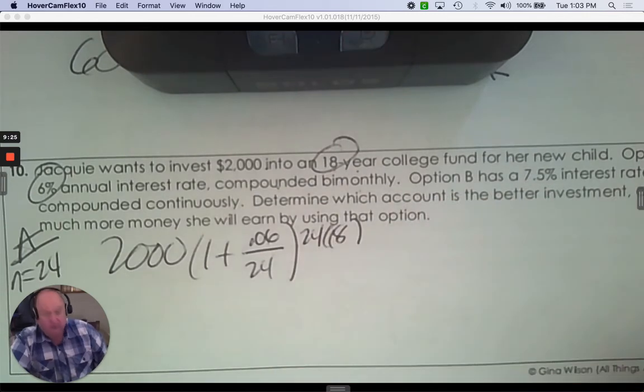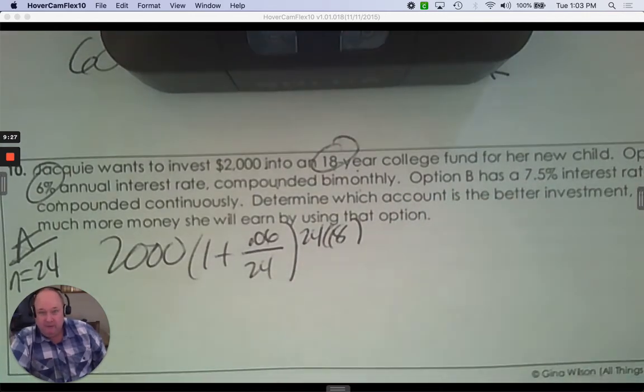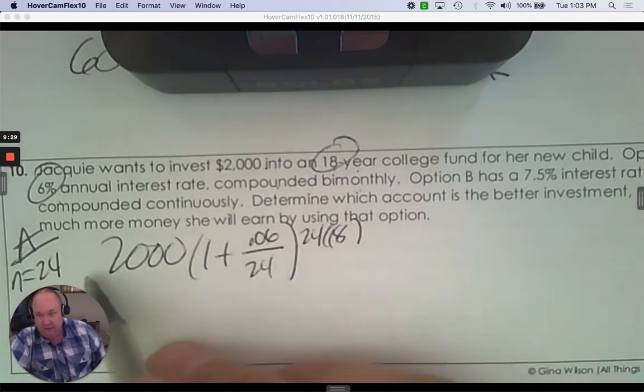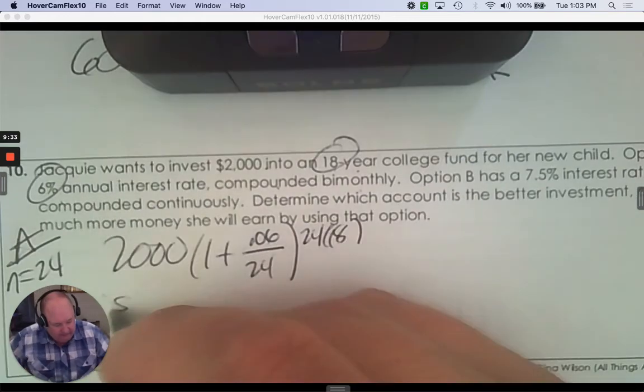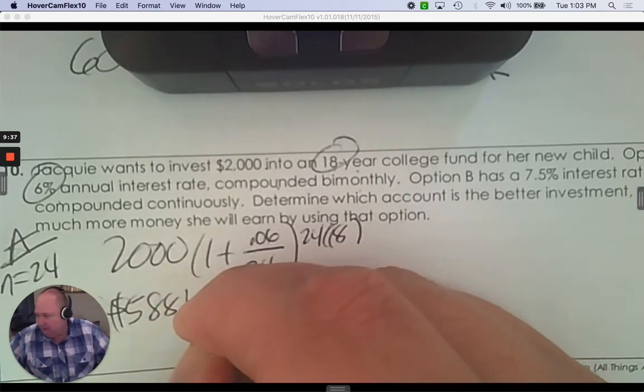So there's your formula there for compounded bi-monthly, 24 times a year. Use your calculator. And it's $5,881.43.